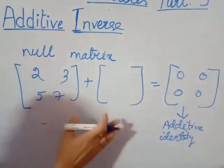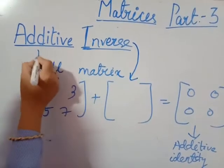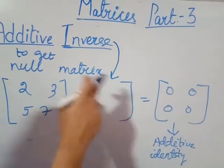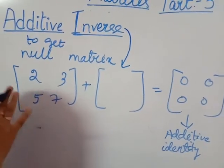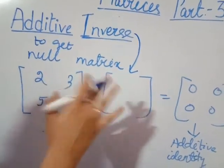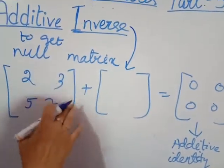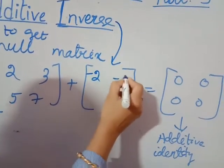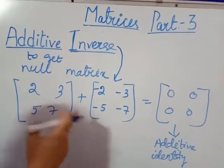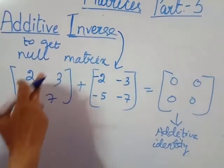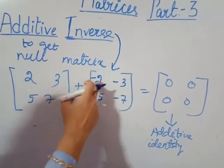The second concept is additive inverse. It is related to additive identity — what you have to add to get the null matrix is called the additive inverse. Very simple: you write the same numbers but change the sign. Here all signs are positive, so you change them to negative: minus 2, minus 3, minus 5, and minus 7. So this is the additive inverse of matrix 2, 3, 5, 7. Similarly, the additive inverse of minus 2, minus 3, minus 5, minus 7 is 2, 3, 5, 7.